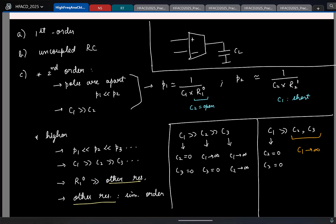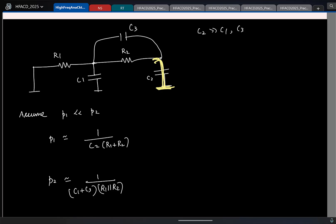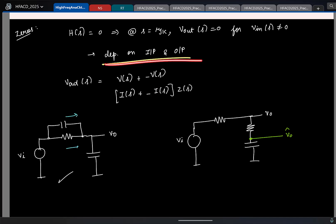Now, coming to zeros, one point about zeros, it actually depends on where you apply the input and where you take the output from. And in general, you can have zeros if your output voltage is obtained as sum of two different voltages or two different currents having different frequency dependence.